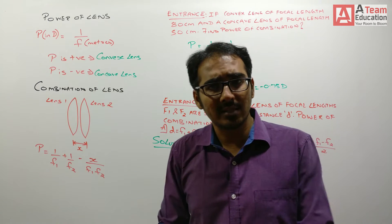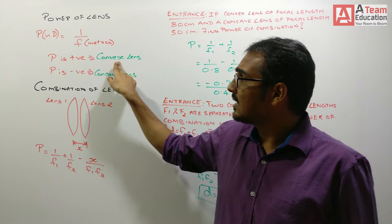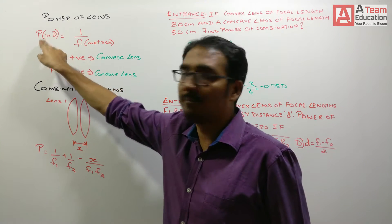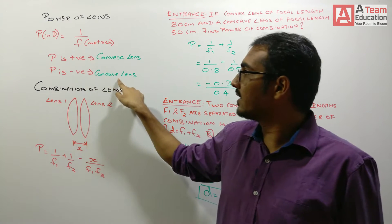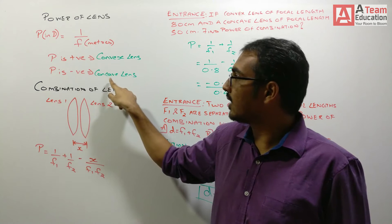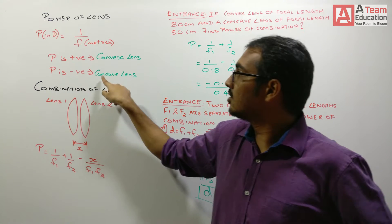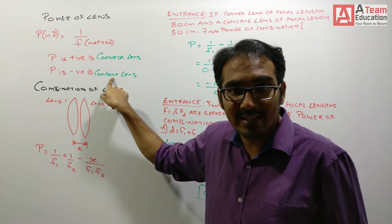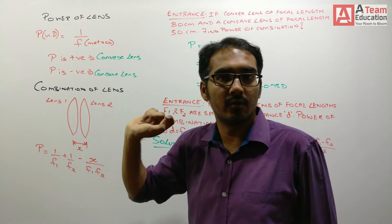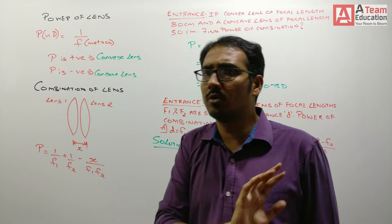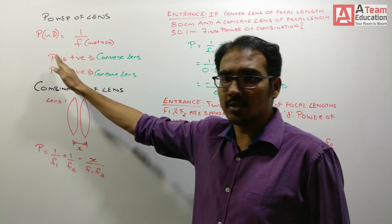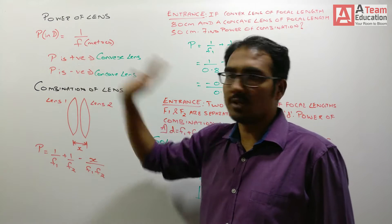Now, as we have already told you that with convex lens, because your focal length is positive, then your power will also be positive. Again, concave lens, if you remember CN, cartoon network, so if you have a concave lens, then your focal length is negative, hence your power will also be negative. Very simple to remember. If your focal length is positive, power is also positive. Focal length is negative, then power is also negative.